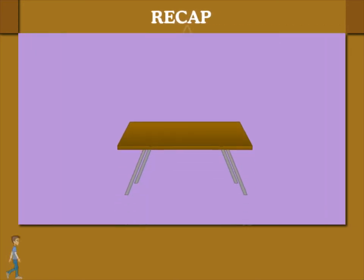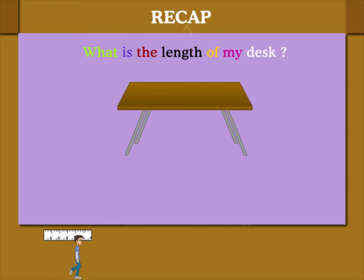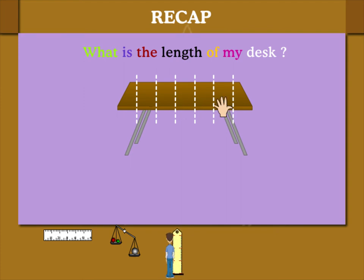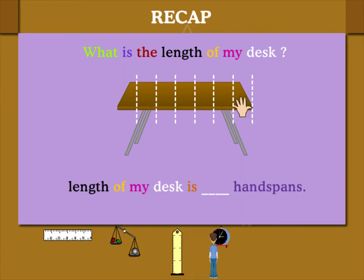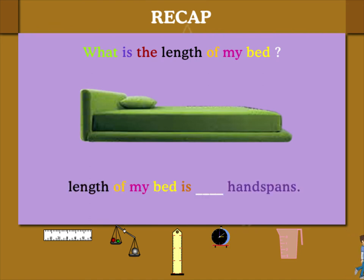Here is my desk. What is the length of my desk? Let me use the handspan. One, two, three, four, five, six, seven. So the length of my desk is seven handspans. What is the length of my bed?